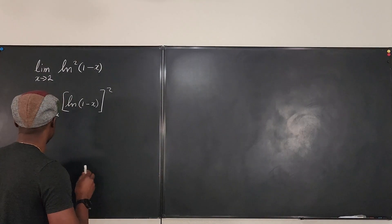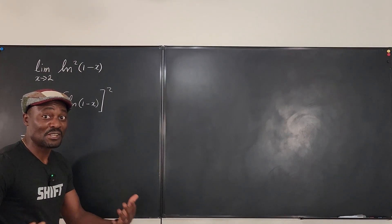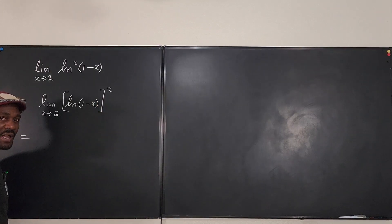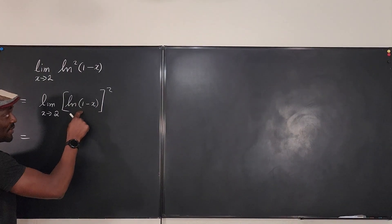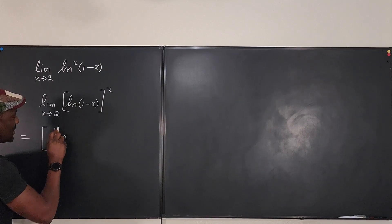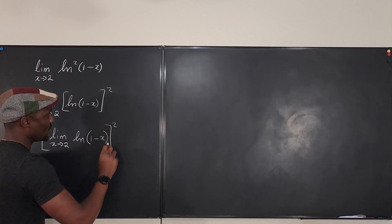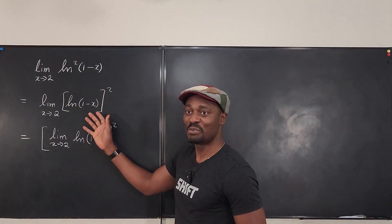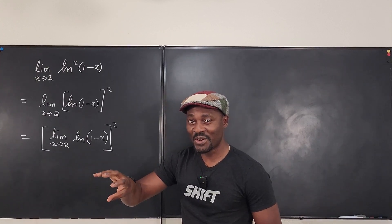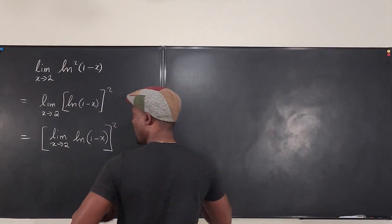When you take the limit of a function, it is also the function of the limit. Instead of writing the expression this way, I could take the limit before squaring it. Because the inner expression has no real output, I can write this as the square of the limit as x approaches 2 of the natural log of (1 minus x). The limit of a function is the function of the limit, as long as the limit exists.